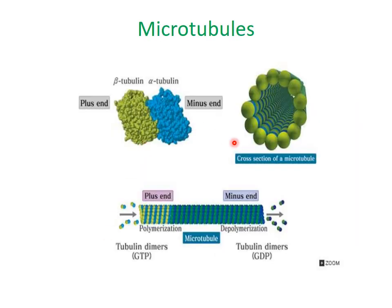In cross-section, the microtubule is a hollow cylinder, like a pipe, with 13 subunits of tubulin dimers. There is the alpha tubulin and the beta tubulin. At one end — the plus end — polymerization is taking place with addition of tubulin dimers, while at the other end — the minus end — depolymerization of the tubulin dimers occurs.